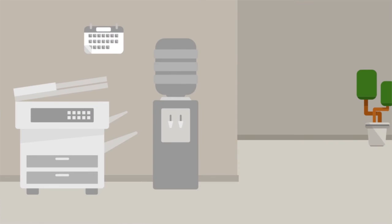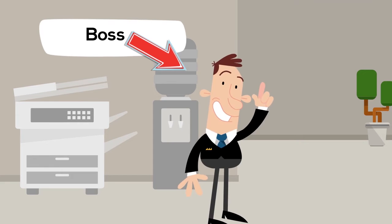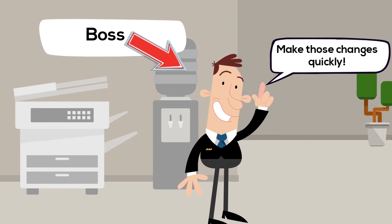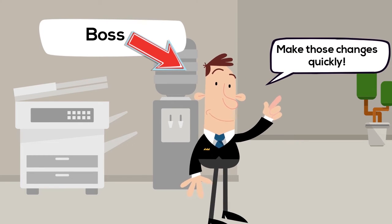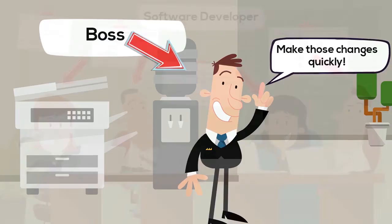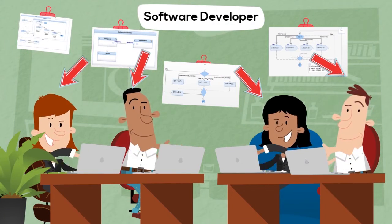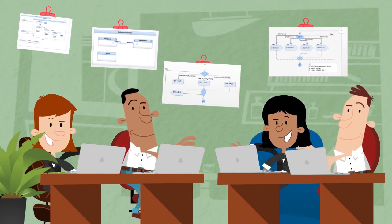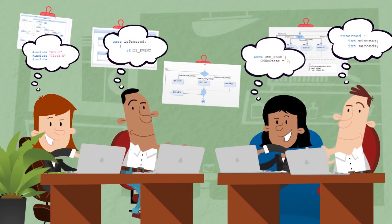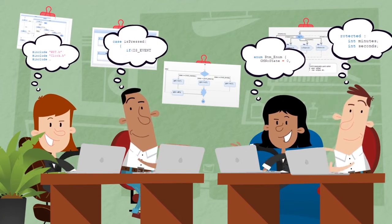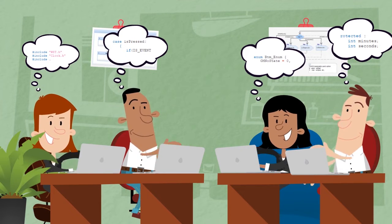However, there's one problem. When you're working to deadlines, there isn't time to update the model and code at the same time. Thus, changes are often only made to the code, which means that code and model begin to differ.